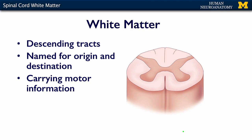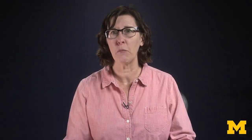Descending tracts are the same — they're named for their origin and their destination, but they're carrying motor information. They're going to come down from the brain, and often they're going to synapse in the ventral horn or the intermediate zone before they go out to the periphery. And they're carrying motor information.